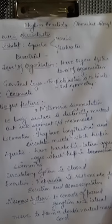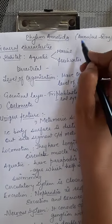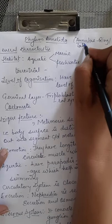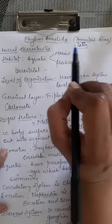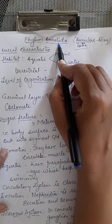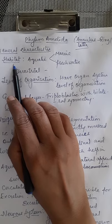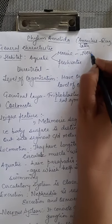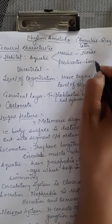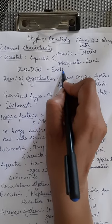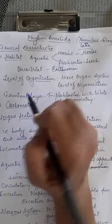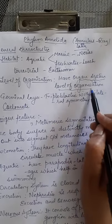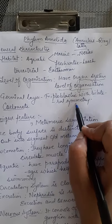Now we come on to the next phylum — Annelida. The word Annelida is derived from 'annulus,' a Latin word meaning ring, because their body has ring-like structures. Their habitat includes aquatic and marine (e.g., Nereis), freshwater, and terrestrial (e.g., earthworm). They have organ system level of organization, are triploblastic with bilateral symmetry, and are coelomate.